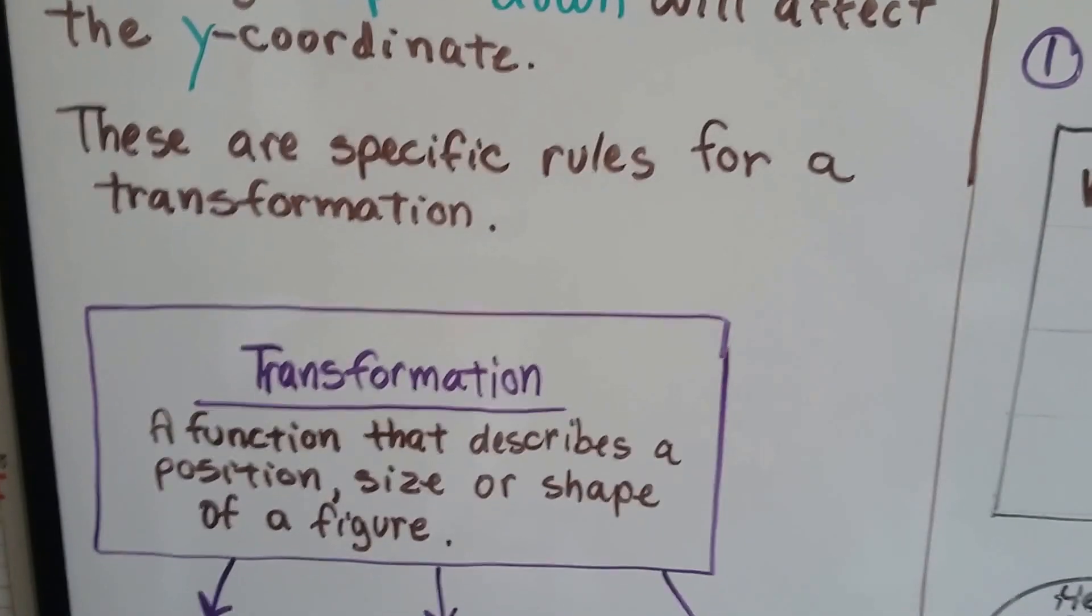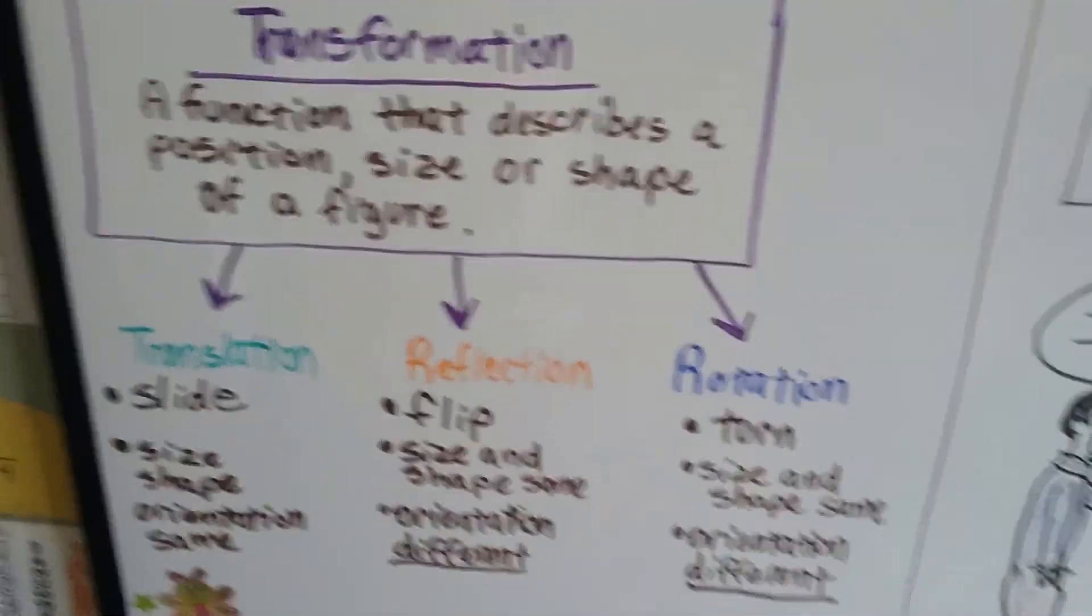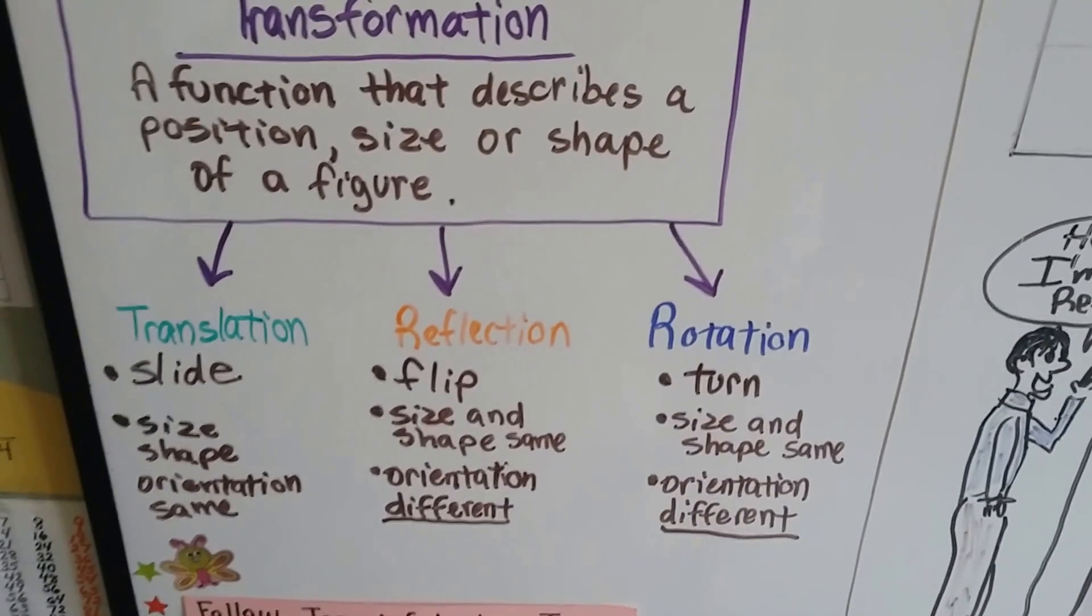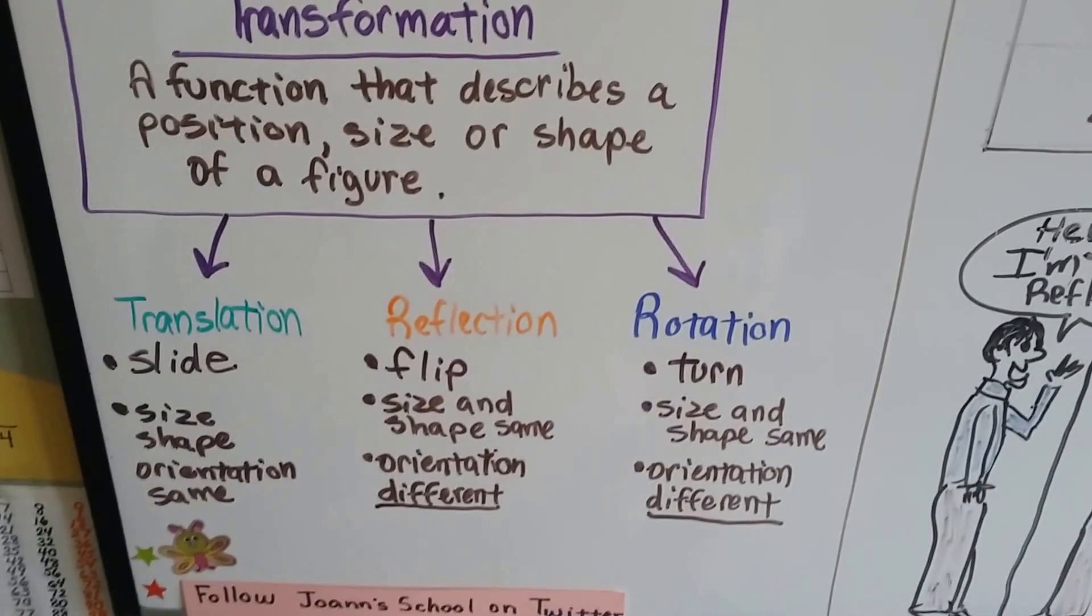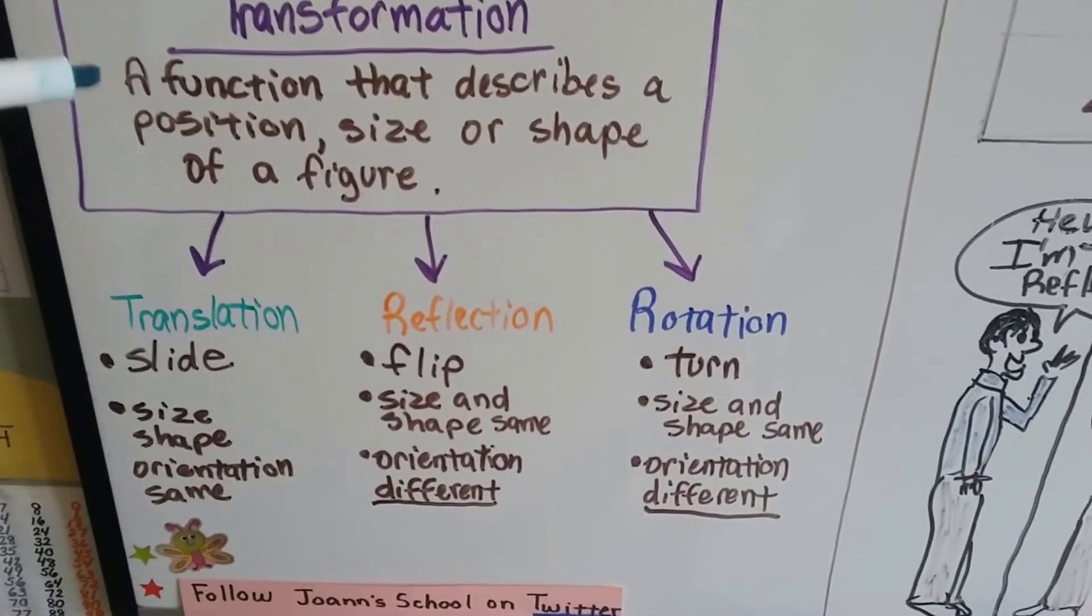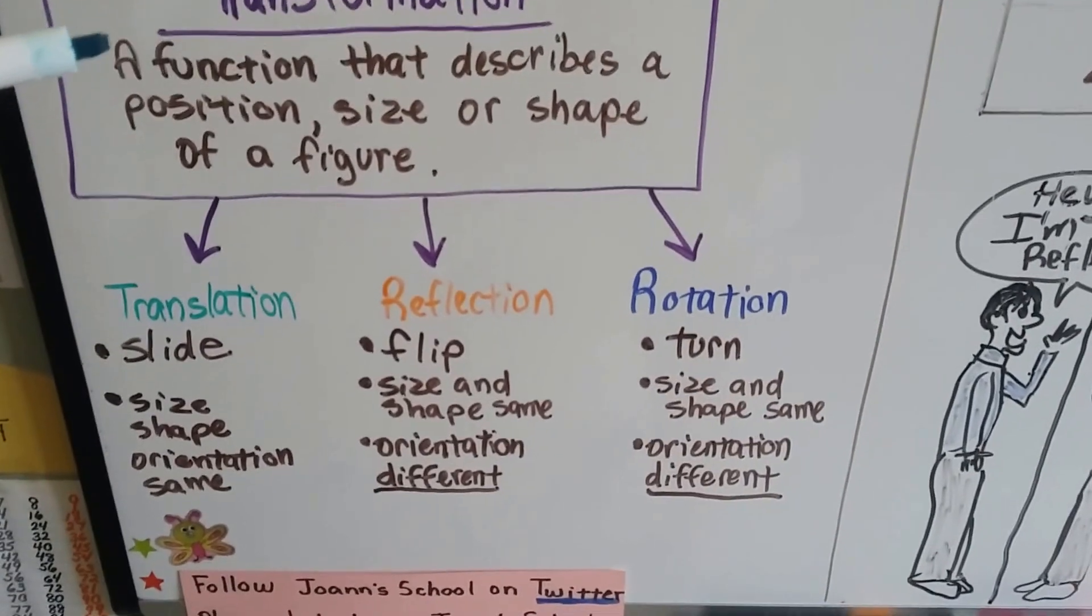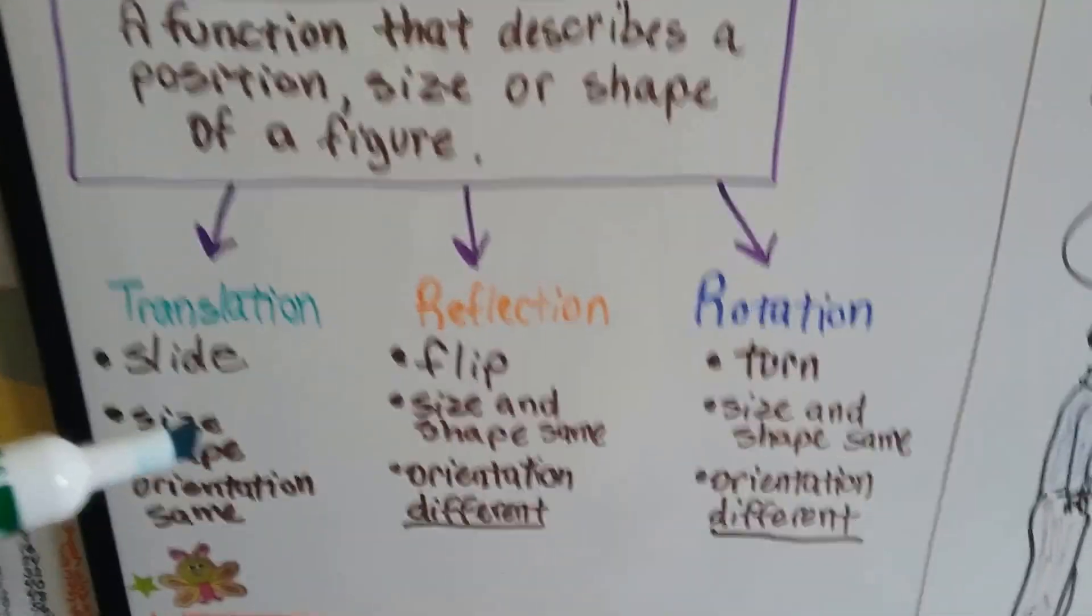And these are specific rules for a transformation. And if you remember from the last unit, 9.3, transformations are a function that describe a position, a size, or shape of a figure. And there were three transformations.